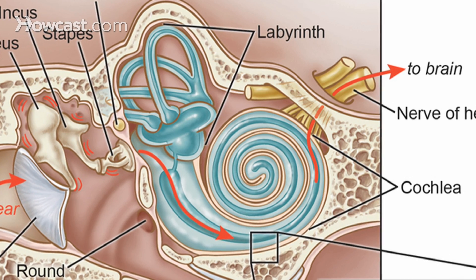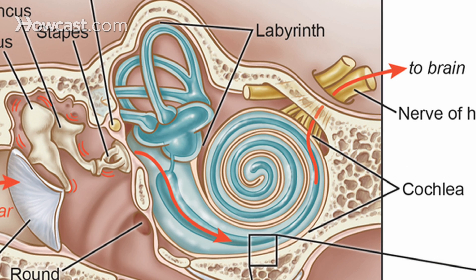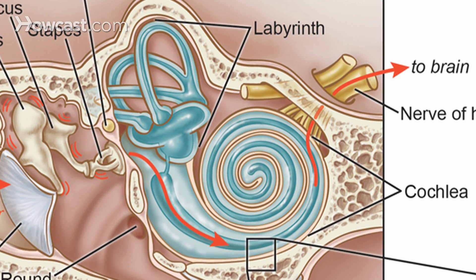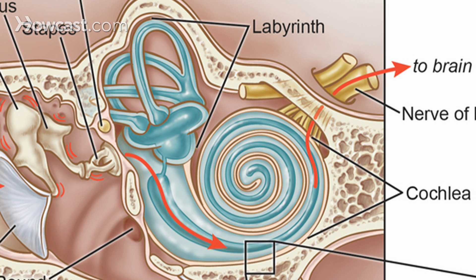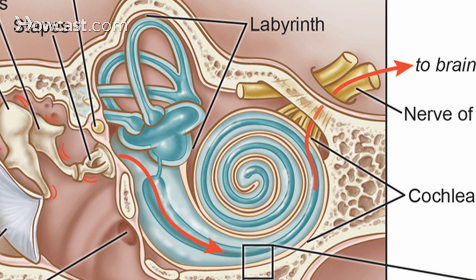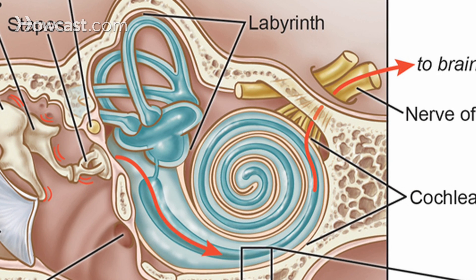Viral inner ear infections can affect either the organ of hearing or the organ of balance. When the organ of hearing is affected, the infection will usually present as a sudden hearing loss. It will not present with pain. In addition to hearing loss, it may cause a ringing noise in the ear, which we call tinnitus, or a sense of fullness or distortion.